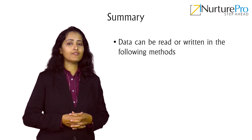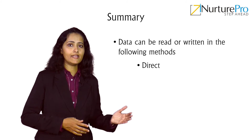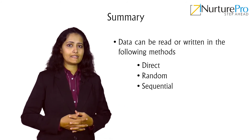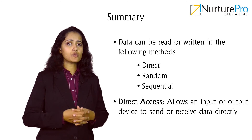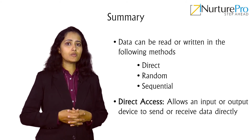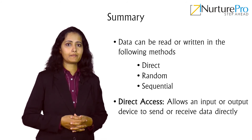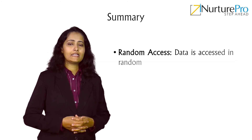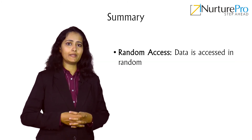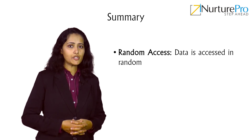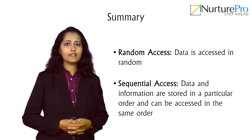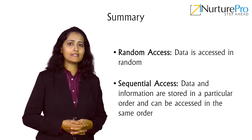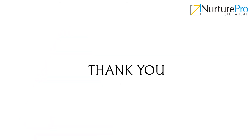Let us have a quick recap on what we discussed. Data can be read or written in the following methods: direct, random, and sequential. Direct access allows an input or output device to send or receive data directly. Random access means data is accessed in random order. Sequential access means data and information are stored in a particular order and can be accessed in the same order. Thank you for watching.